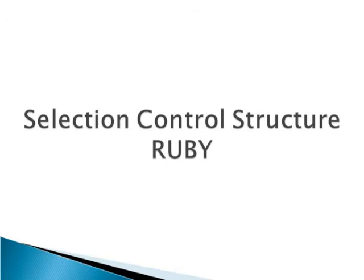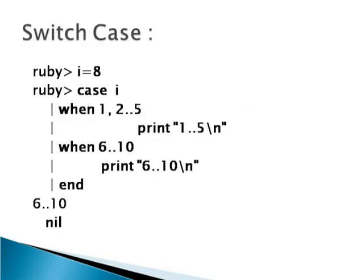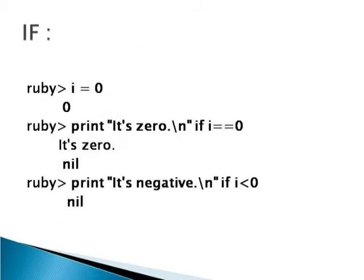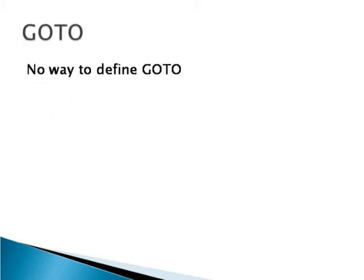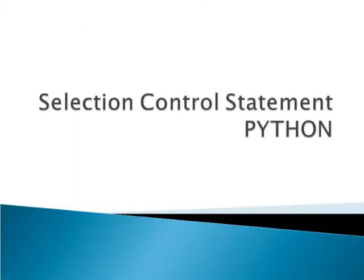Now we'll move on to the selection control structures in Ruby. There's no way to define goto statements in Ruby language. Then let's move to the language Python.